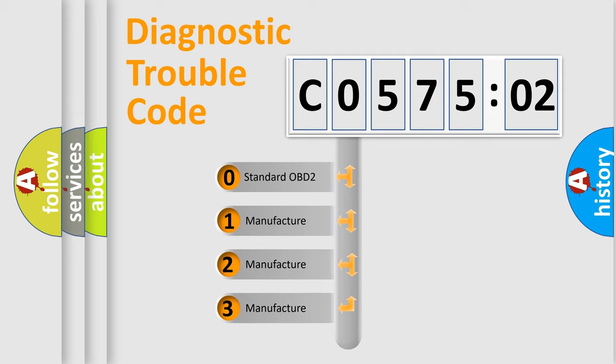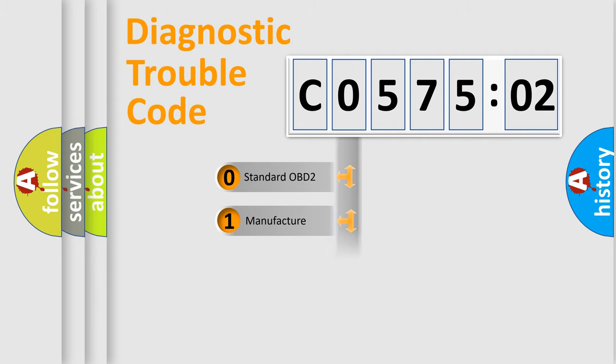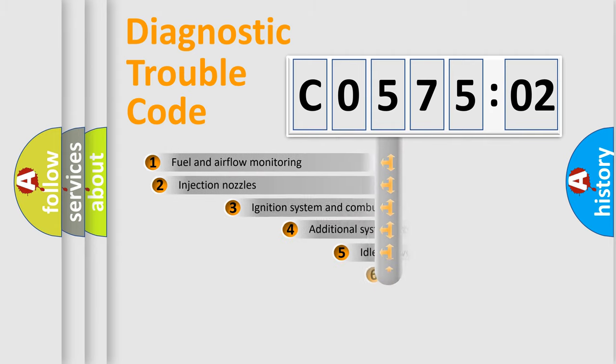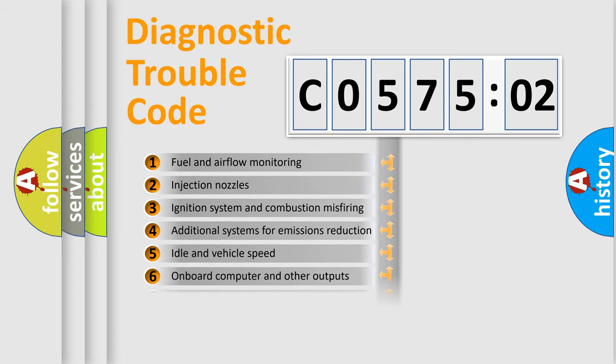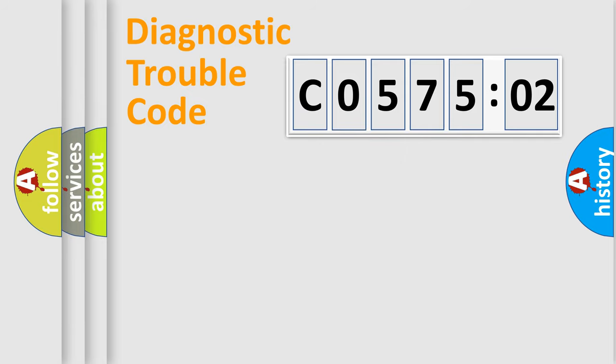If the second character is expressed as zero, it is a standardized error. In the case of numbers 1, 2, 3, it is a manufacturer-specific expression of the car-specific error. The third character specifies a subset of errors. The distribution shown is valid only for the standardized DTC code.